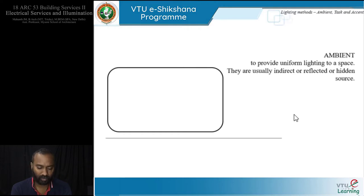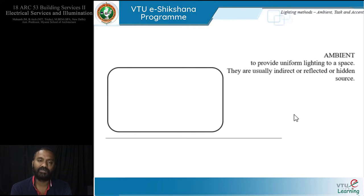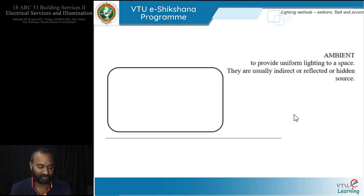By definition, ambient lighting provides uniform lighting to a space. It is usually from an indirect, reflected, or hidden source. When we talk about indirect, reflected, or hidden sources, we will cover that further when we discuss luminaires. For now, we can use our imagination — and that becomes your ambient lighting.